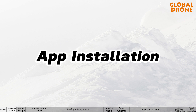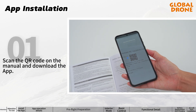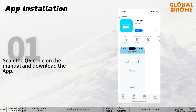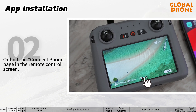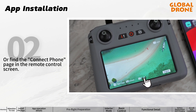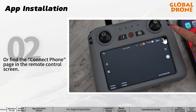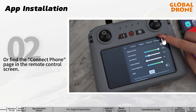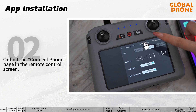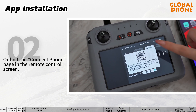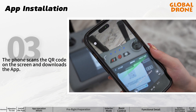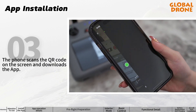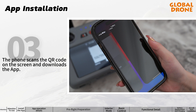App Installation: scan the QR code on the manual and download the app. Or find the connect phone page in the remote control screen, then scan the QR code on the screen to download the app.